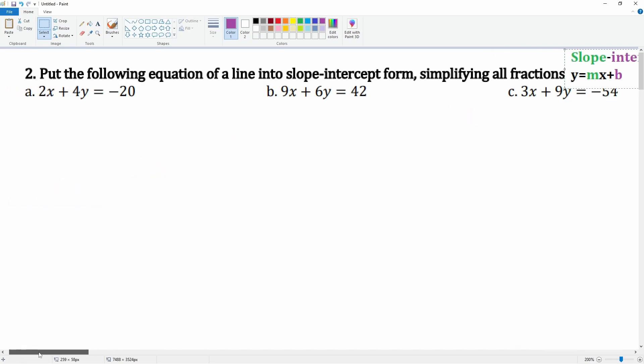Alright, so let's do a. The first thing we're going to do is we are going to subtract 4y to both sides. Now we are going to subtract 2x to both sides. In this process, this is going to cancel, leaving you with just 4y equal to negative 2x minus 20.